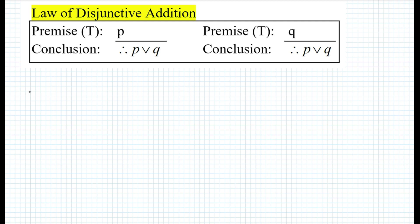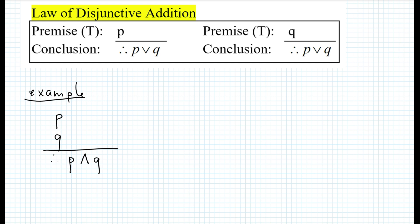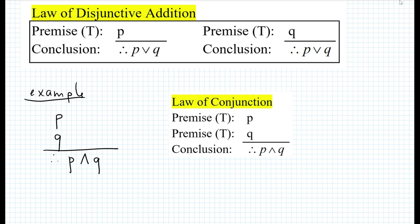Here's an example. Let's say P is true and Q is true. What can you conclude from these two premises? The truth table shows that the only time a conjunction is true is when both conjuncts are true. Since both P and Q are true, P and Q must be true as well. Since we're dealing with conjunction, this law is called the law of conjunction.